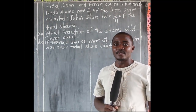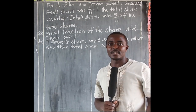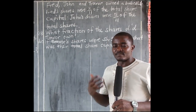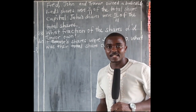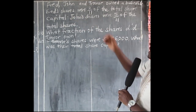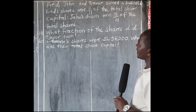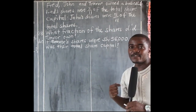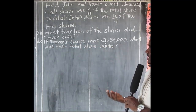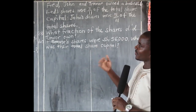Hello children, welcome. From the previous activity I left you with a problem to attempt. The question was: Fred, John, and Trevor owned a business. Fred's shares were 2 out of 11 of the total share capital. John's shares were 5 out of 11 of the total shares. Part A: what fraction of the shares did Trevor own?